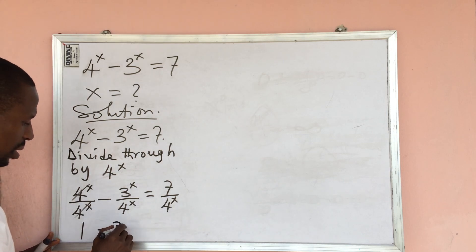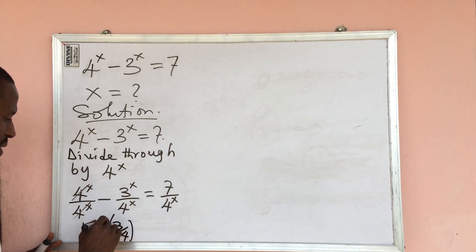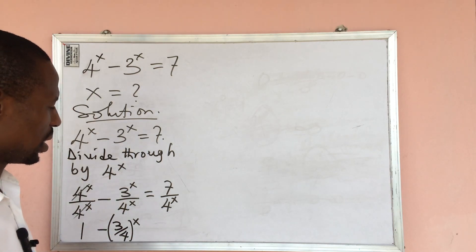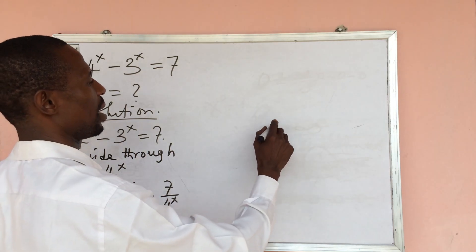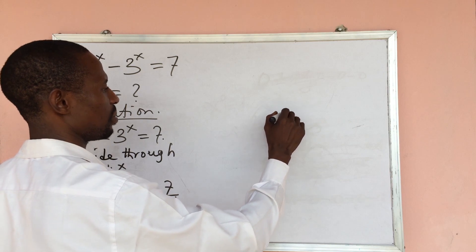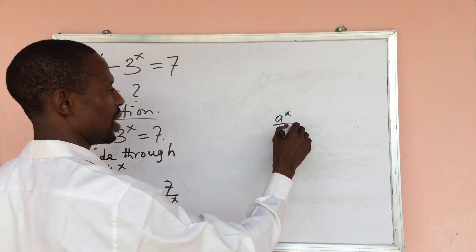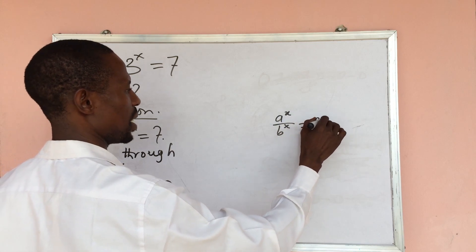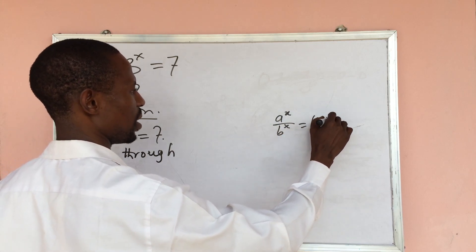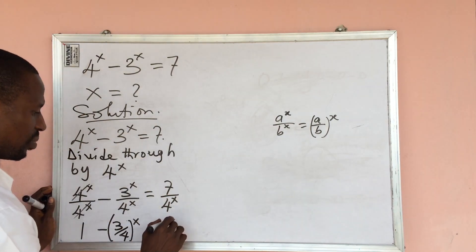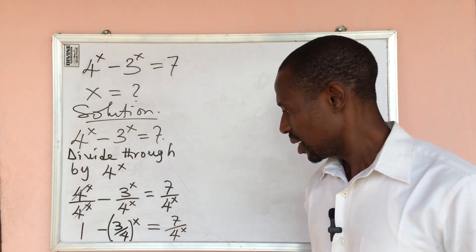So here we're going to have 1 minus — and this expression is going to give us something special, which is 3 all over 4, all to the power of x. According to the law of indices, if you have a to the power of x all over b to the power of x, this can be expressed as a all over b, all to the power of x. The right-hand side remains 7 all over 4 to the power of x.